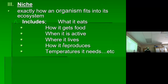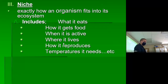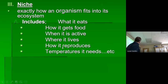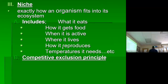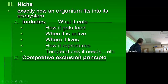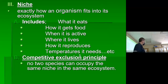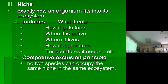What you get is a picture of exactly how that critter fits into its ecosystem. And the reason we talk about niche is because niches can overlap — two different species could have the same food, live in the same place, be out at the same time of day. But there's a rule called the competitive exclusion principle, which says no two species can occupy exactly the same niche in the same ecosystem. Why can't they? Because they would have to compete for resources.